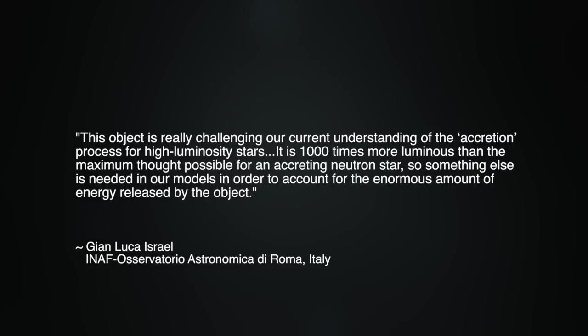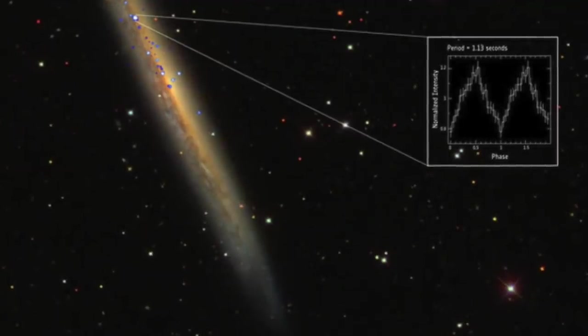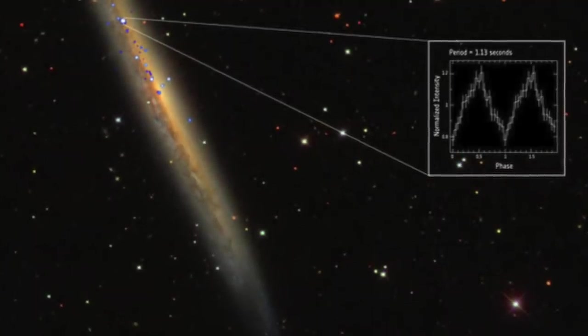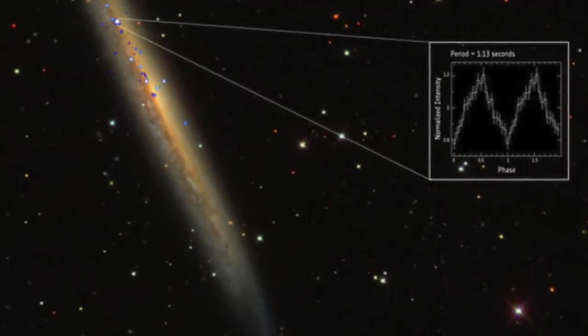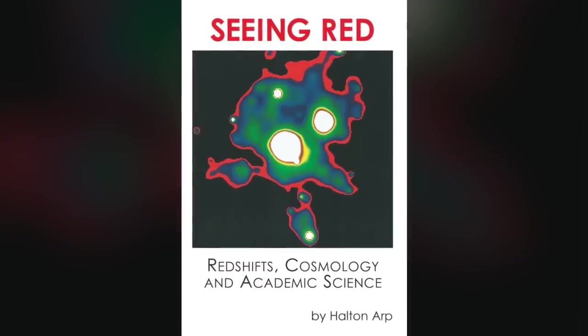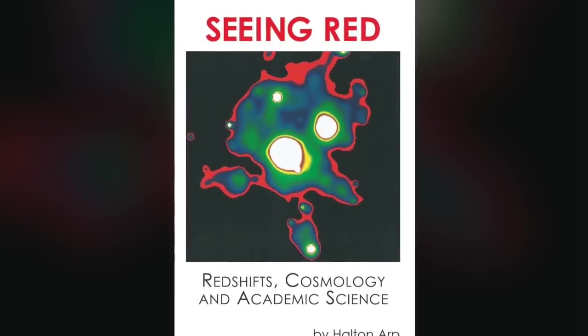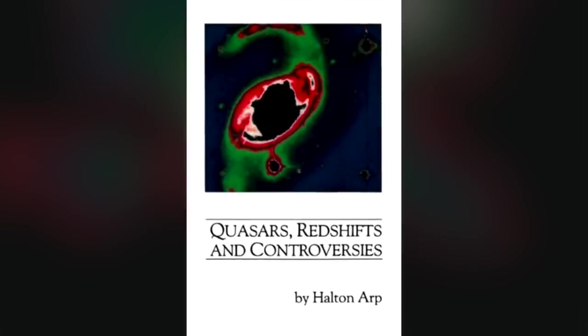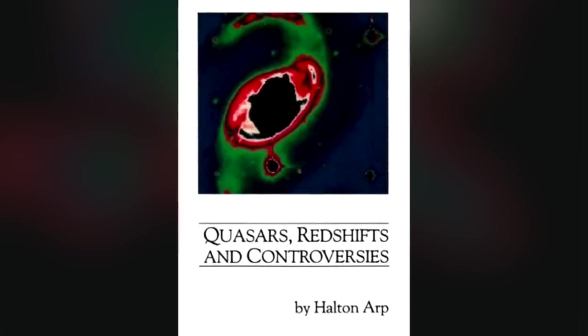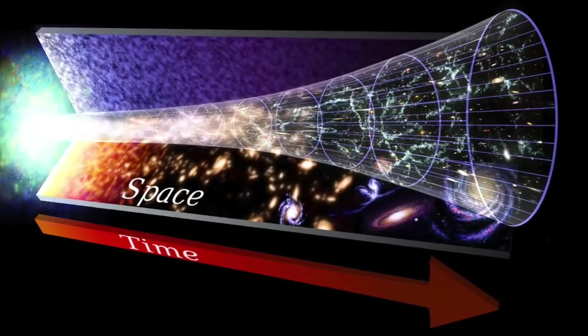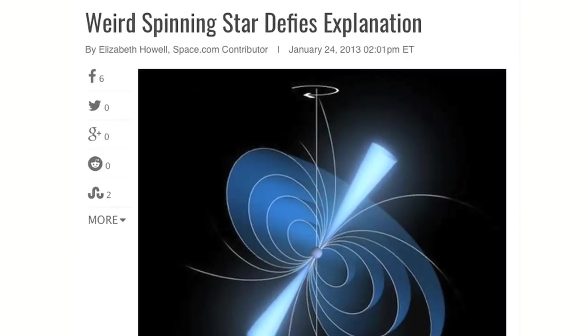Something else is needed in our models in order to account for the enormous amount of energy released by the object. But the impossible brightness of distant celestial objects is a direct result of assuming that redshift gives the distance of those objects. The late astronomer Halton Arp proved that redshift is a measure of youthfulness, not distance. So the impossible brightness then becomes normal for a nearby object. It also means that the expanding universe of the Big Bang does not exist.